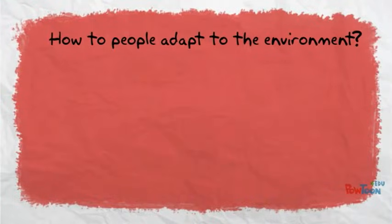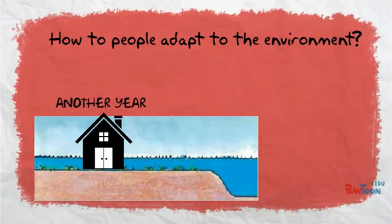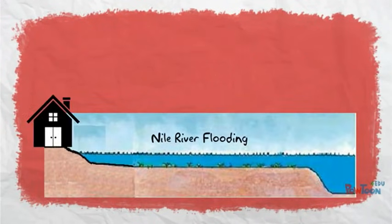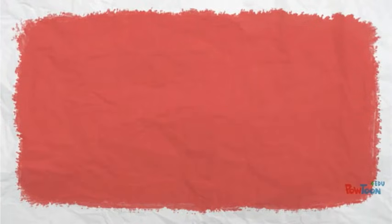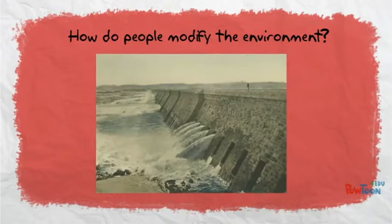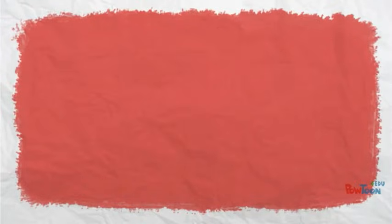How do people adapt? Those same ancient Egyptians had to rebuild their homes each year after the annual flooding. But as time went on, they adapted and started to build their homes above the flood plain. How do people modify the environment? The ancient Egyptians learned to build irrigation ditches, which led to watering crops without waiting for the annual flood. In modern times, the Egyptians built a dam to control the floodwaters of the Nile River.